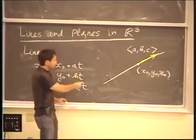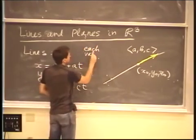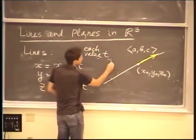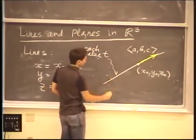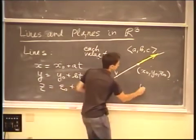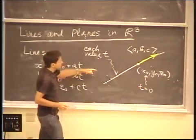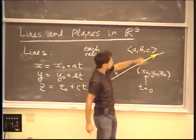In other words, for each value of t, each value of t gives rise to a particular point on this line. For instance, t equals 0 corresponds to this point, t equals 1 corresponds to this point, and so on.